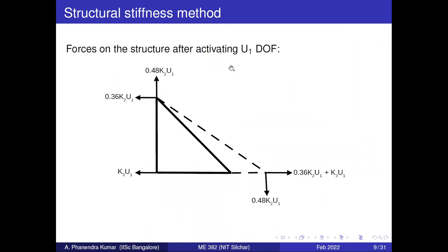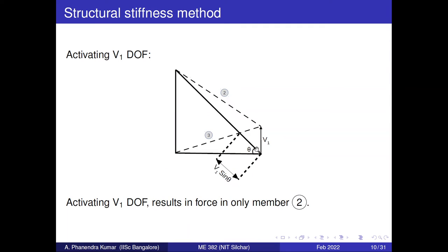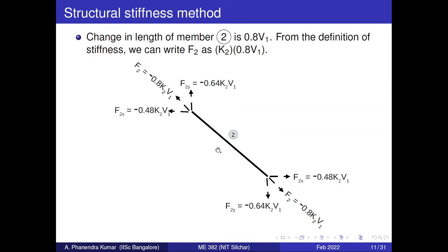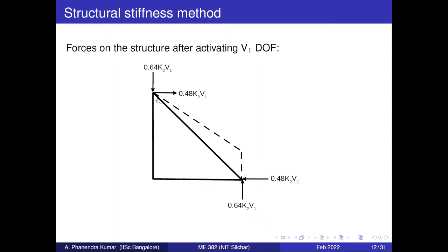Using the stiffness definition: k2 equals f2 divided by 0.8 v1, so the force generated in member 2 is k2 times 0.8 v1. However, in this case the member length is decreasing — the length has decreased rather than increased — so this results in a compressive force. We resolve this force in the global x and y directions. This is the final free body diagram after activating the v1 degree of freedom.